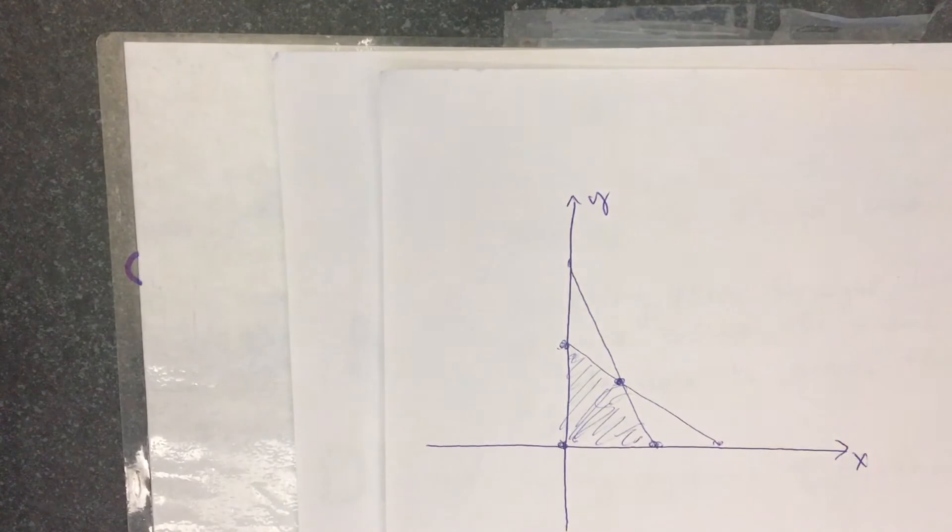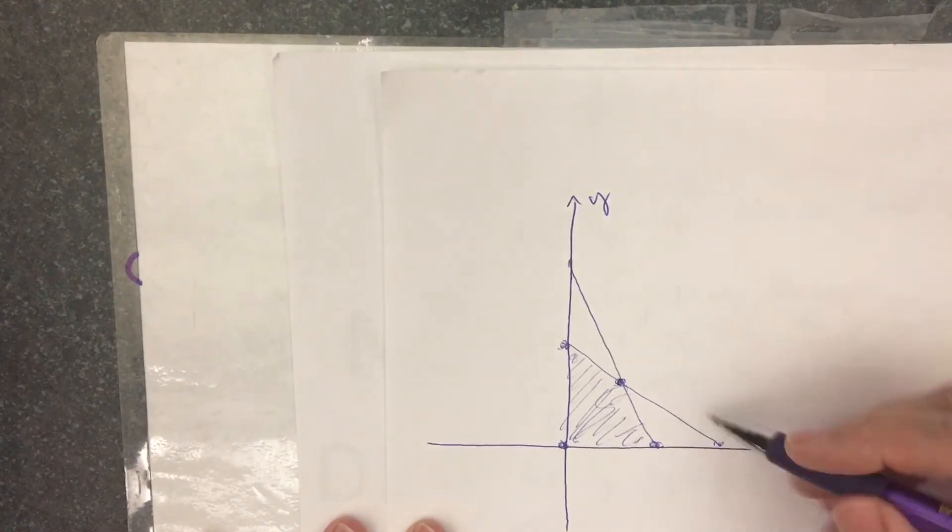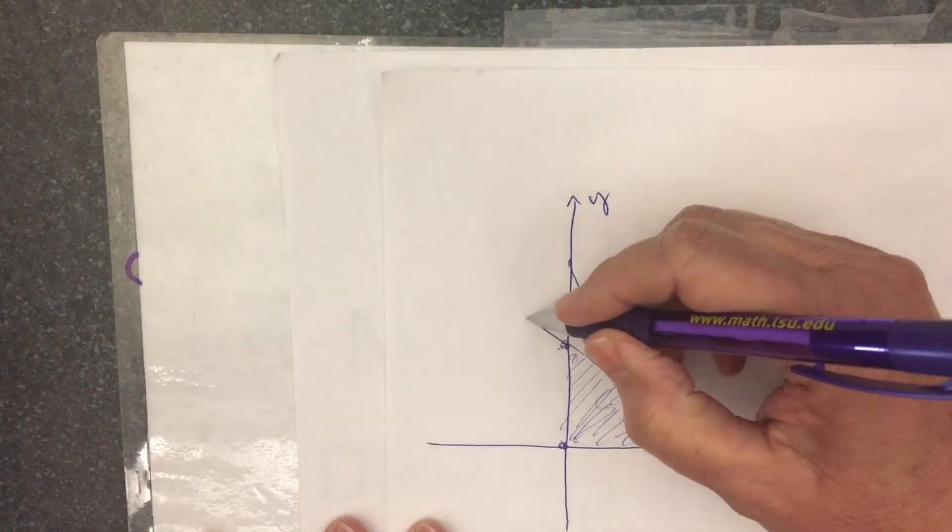The problems in 7.5, we're going to come up with equations. We're going to graph those equations. I'll extend the line a little bit.